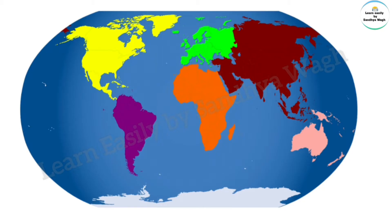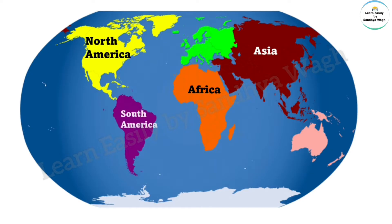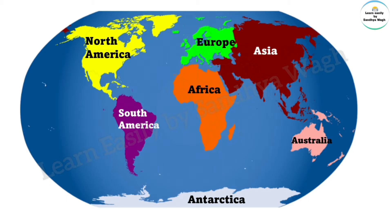There are total seven continents: Asia, Africa, North America, South America, Europe, Australia, and Antarctica. Asia is the largest continent. Two thirds of the Earth's surface is covered by water. The large water bodies are called oceans or seas.